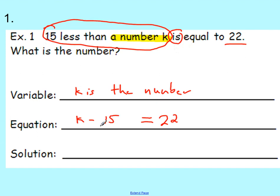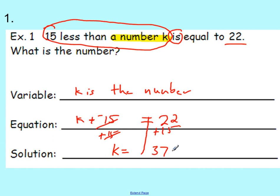Once we have our equation built, we use our algebra rule. We add 15 to both sides — add its opposite. These cancel out. k equals 22 plus 15, which is 37. So what is the number? The number is 37. That's the question — that's what we're identifying the variable for.